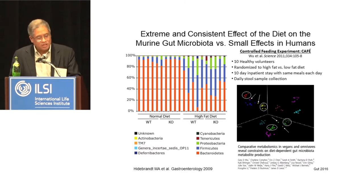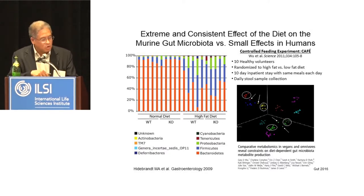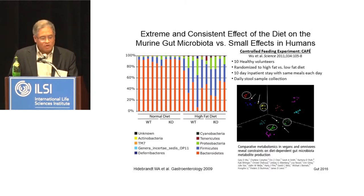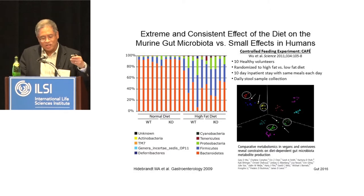What about humans? We published a controlled feeding experiment where 10 healthy volunteers were randomized to a high-fat or low-fat diet over a 10-day inpatient stay with stool samples collected. In a principal coordinate analysis — where each dot represents the entire microbiota composition from one stool sample — each color is a different individual. Within 24 hours, the human gut microbiota changes composition, but that change is exceedingly modest compared to how different we are from each other. The trajectory from day one onward is seemingly stochastic and unpredictable.